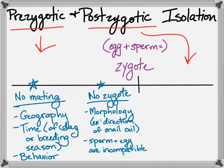The other way is mating happens, but the sperm and egg no longer fuse. This is gametic isolation — that incompatibility means no zygote will form.